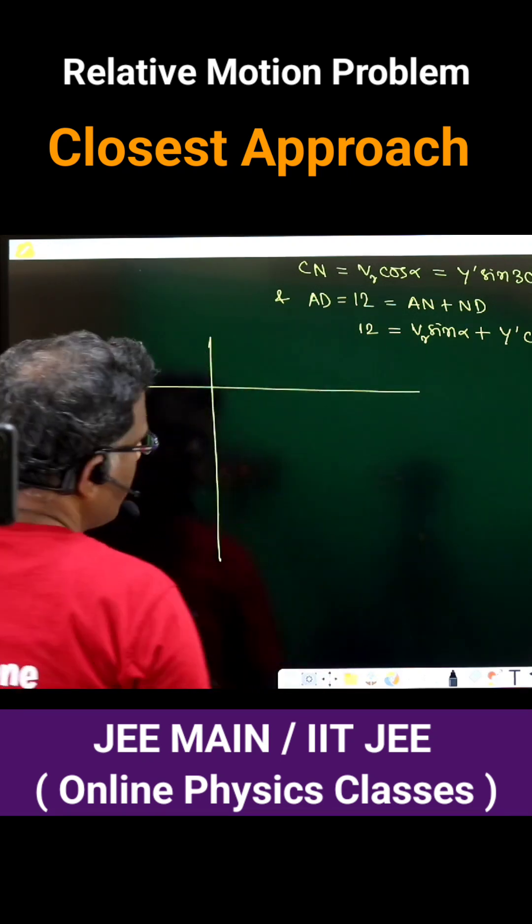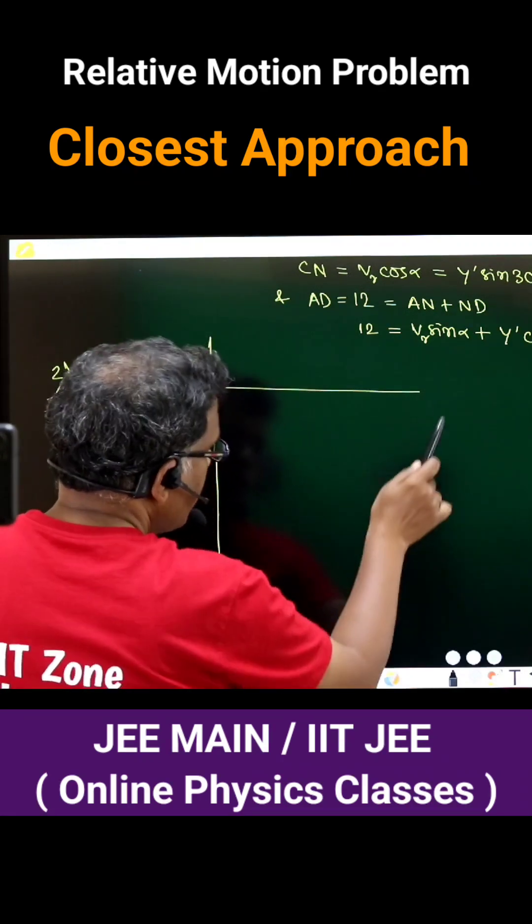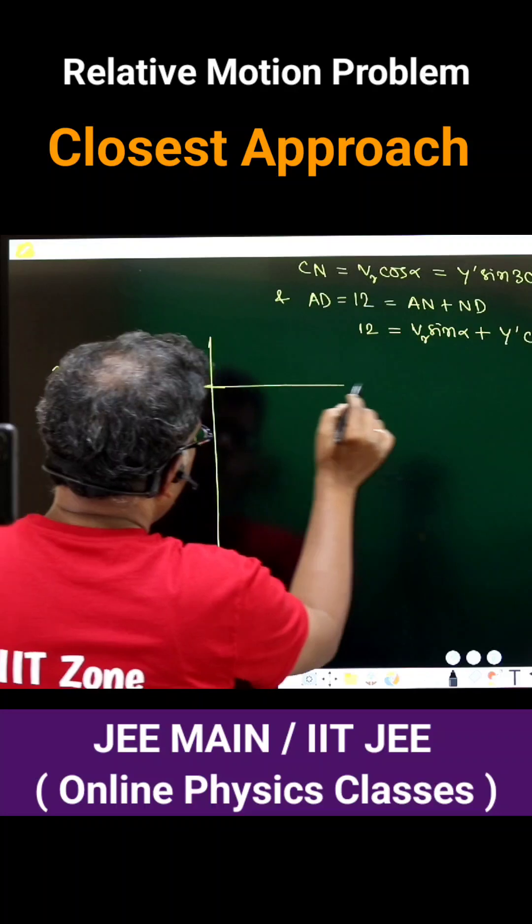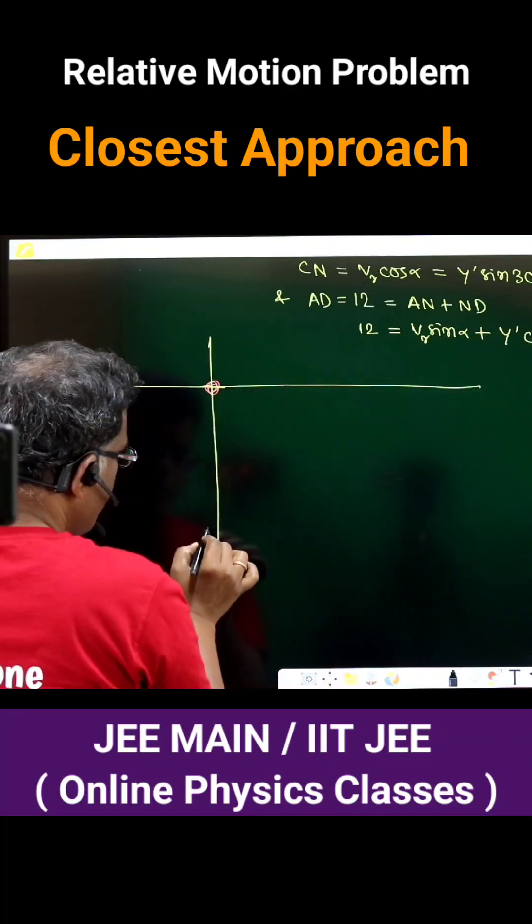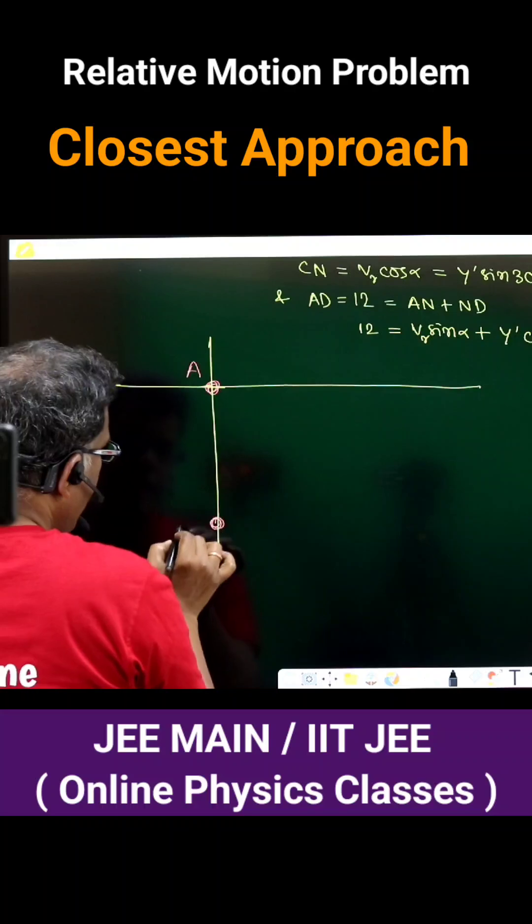Now there are two mutually perpendicular roads. On these two roads, we can see two moving objects are located. One is A, another one is B.